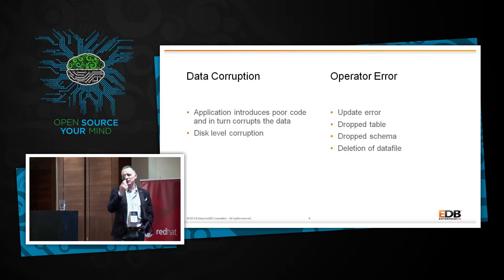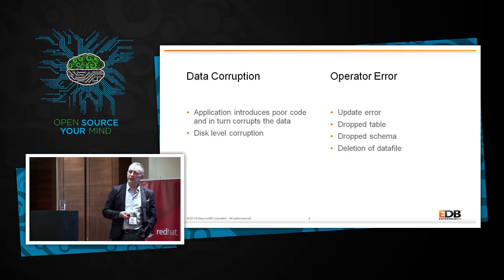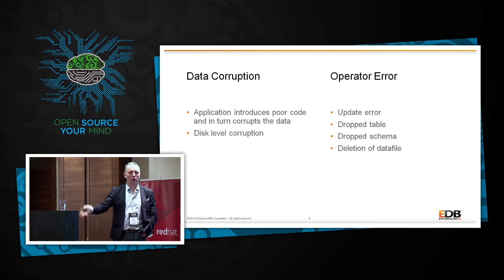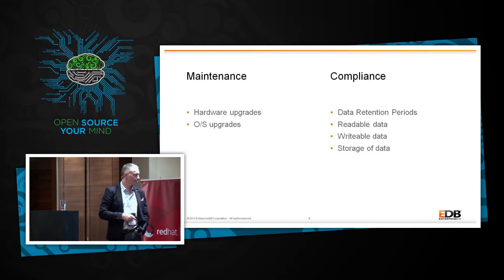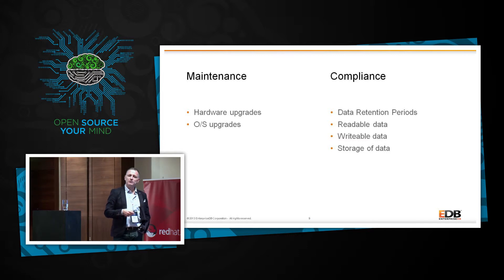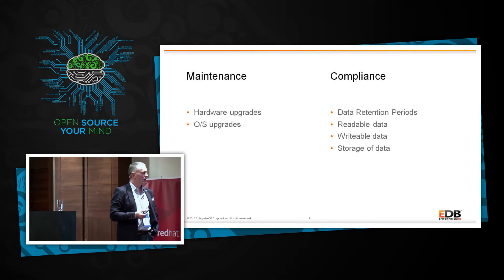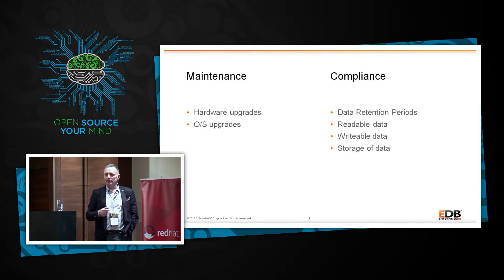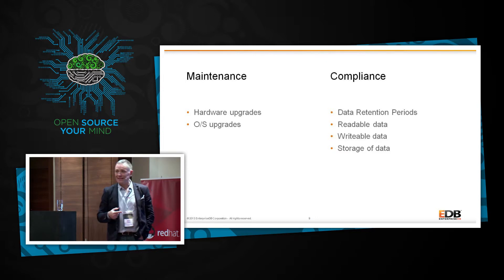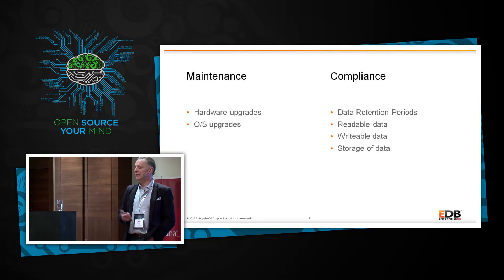Operator error — you could write a list of a thousand things there: update error, drop table, drop schema, and even a deletion of a data file. That has an impact because when you start Postgres it doesn't check for the data files; it's only when you access a block on the data file that it errors. Maintenance covers hardware upgrades and OS upgrades — that is still to be part of your backup and recovery strategy. And finally compliance: your retention periods, readable data, writable data, and the storage of data. If you are backing up data and need access to it, is it just for reporting? Do you actually need it in any other state than readable? That can have an impact on your recovery scenarios.